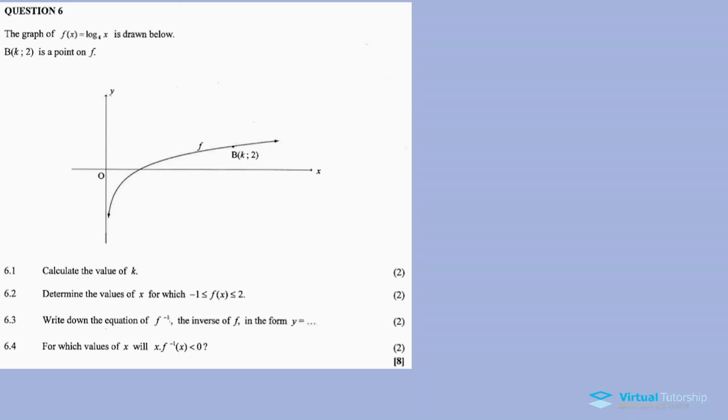I'm going to qualify. In the description box you'll also find the links for many more questions. This is how we are. 6.1: calculate the value of k. So this is straightforward. They give us a point B.